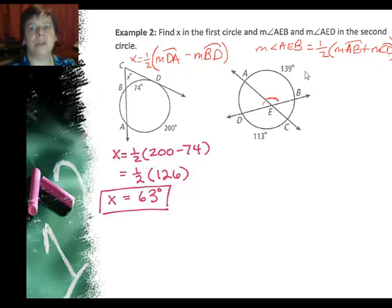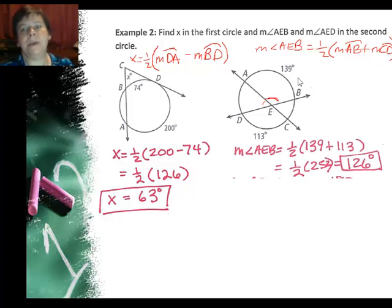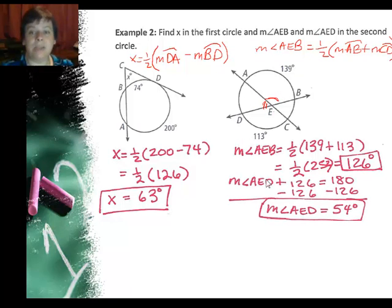So you add those and then divide by two. So I set up my equation, the measure of angle AEB equals one half of 139 plus 113, and adding those together and dividing by two I get 126. I also asked for this angle right here, which I'll do with two marks so you don't mix it up with the other one. That angle is a linear pair with angle AEB.